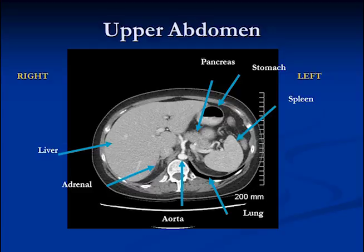These are the edges of the diaphragm on each side, and of course the inferior vena cava, which sits right next to the aorta and is in the retroperitoneum all the way down into the pelvis.